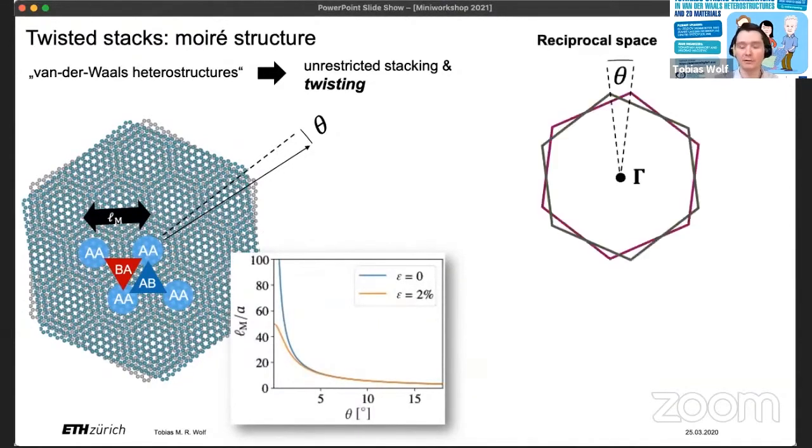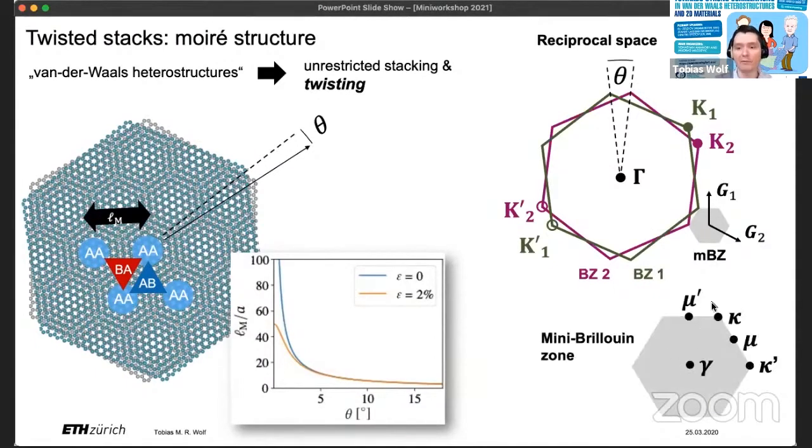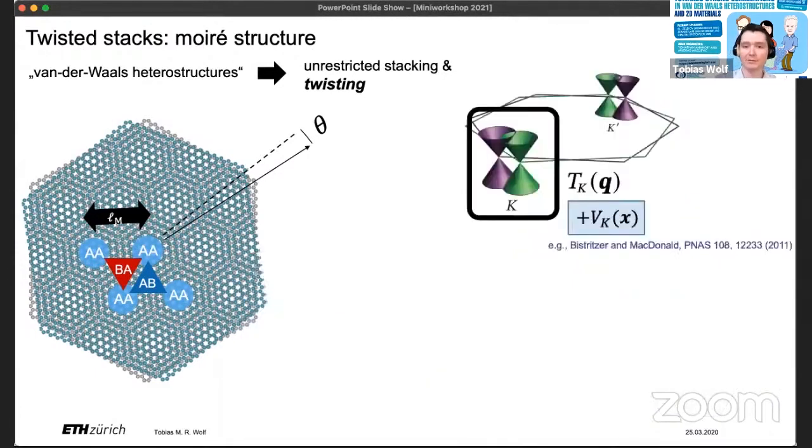Now this twist also appears in reciprocal space. For example, here I showed a Brillouin zone of layer one in green and layer two in purple. And we see that the twist will displace the K points from one another. You also see that because we have a large periodicity in real space, we will in the end have to work with a small Brillouin zone in reciprocal space. Now the high symmetry points in this Brillouin zone are labeled with lowercase letters.